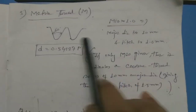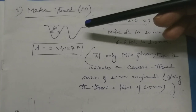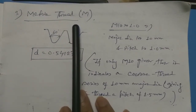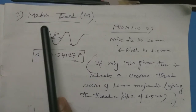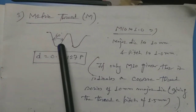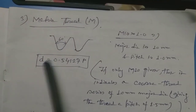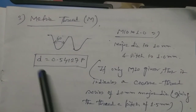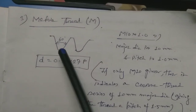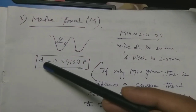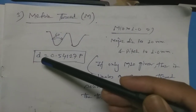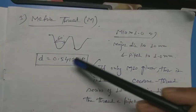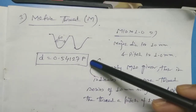The next type is the metric thread, which is very commonly used — almost every application uses it. The metric thread has a thread angle of 60 degrees. The depth of thread D = 0.54127 × pitch, where D stands for depth of thread, not diameter.